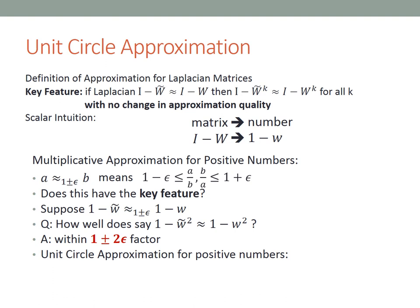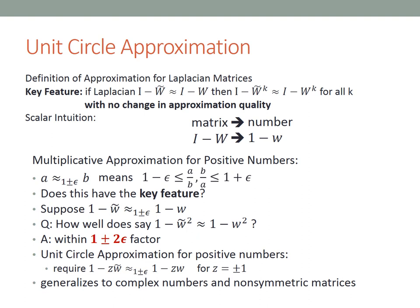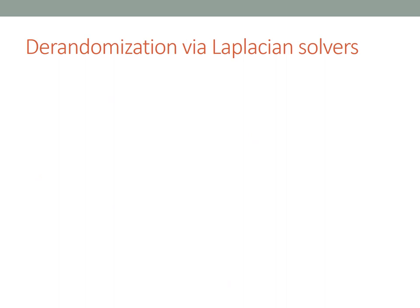Unit circle approximation for positive numbers requires not just that 1 - W̃ and 1 - W approximate each other, but that 1 - ZW̃ and 1 - ZW approximate each other for both Z = +1 and Z = -1. In the general case of complex numbers and non-symmetric matrices, we require the approximation to hold for all roots of unity—hence the name unit circle approximation. With this notion, if W̃ and W have Laplacian matrices that approximate each other, then W̃^k and W^k also have Laplacian matrices that approximate each other with no change in approximation quality.